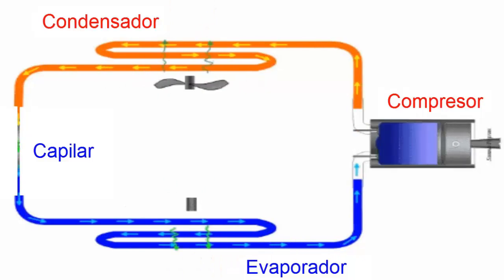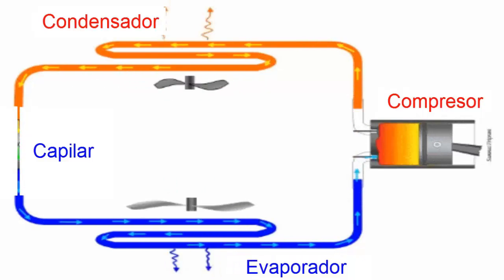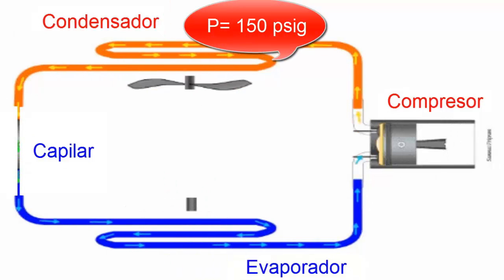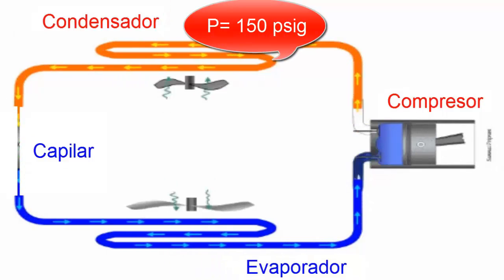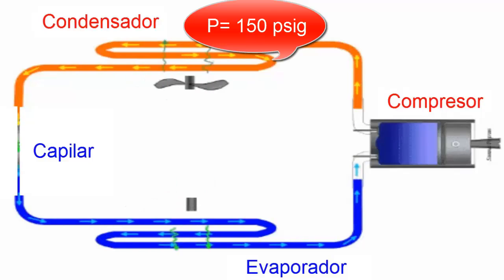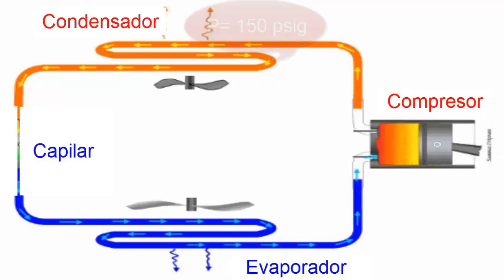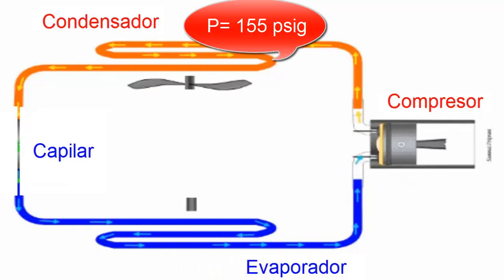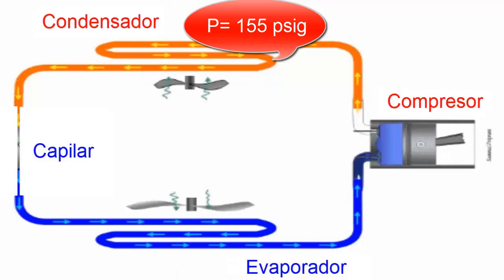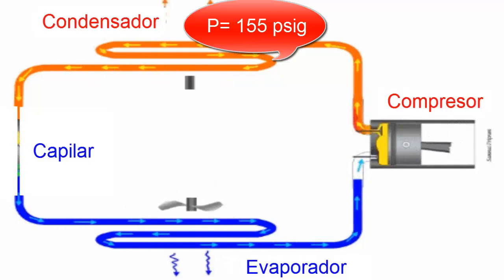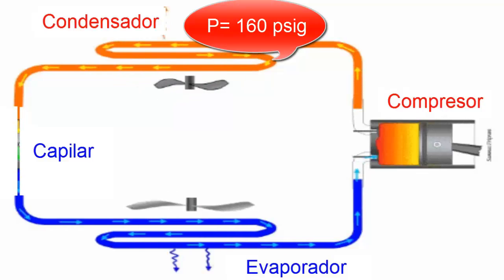3. Despite the obstruction, the compressor continues to suction and discharge refrigerant into the condenser. The condenser, initially at 150 pounds per square inch, starts receiving refrigerant at high pressure. However, due to the obstruction, the refrigerant begins to concentrate in this area, causing an increase in high pressure.